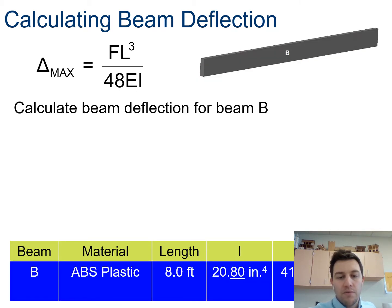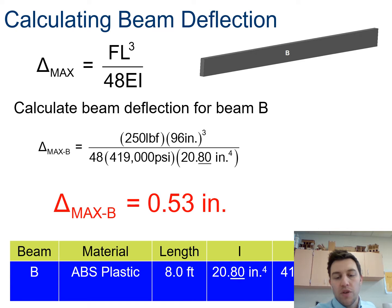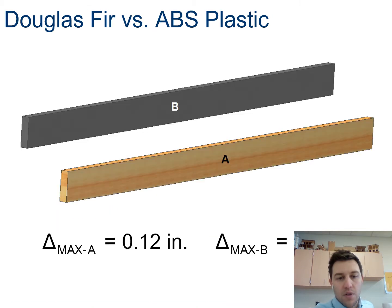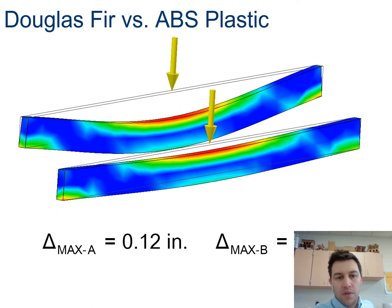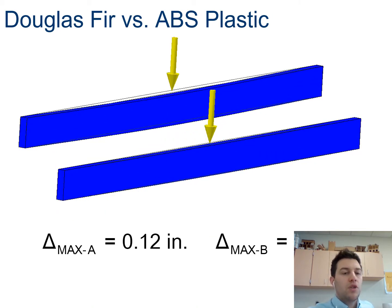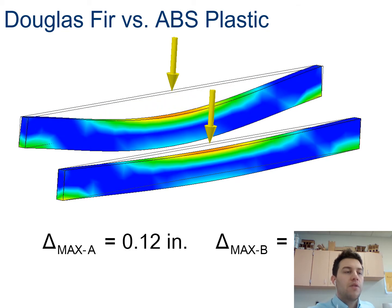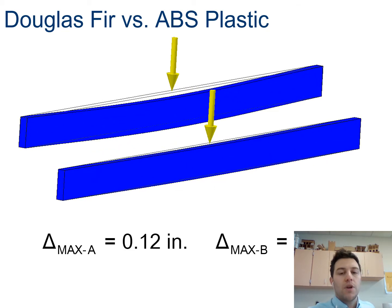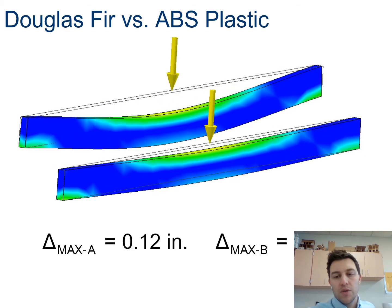For beam B, my deflection is 0.53 inches. So I get a larger deflection because I have a smaller moment of inertia. So that's the discussion of geometric properties combined with chemical or material properties in determining how stiff types of beams are.